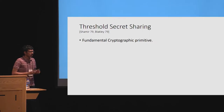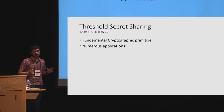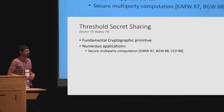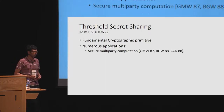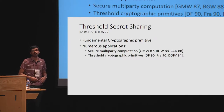We require threshold secret sharing to satisfy two properties. The first is the correctness property, which states that any group of t or more parties can come together and use their shares to reconstruct the secret message m. The second is the secrecy property, which states that any adversary corrupting at most t minus 1 parties learns no information about the secret message.